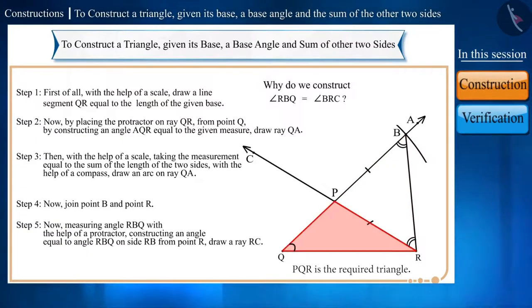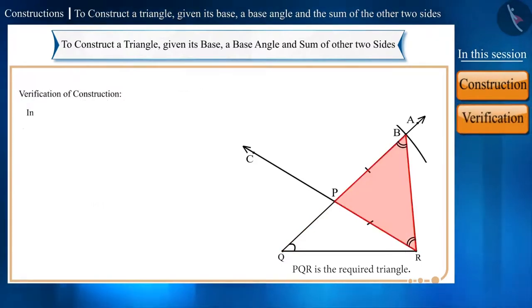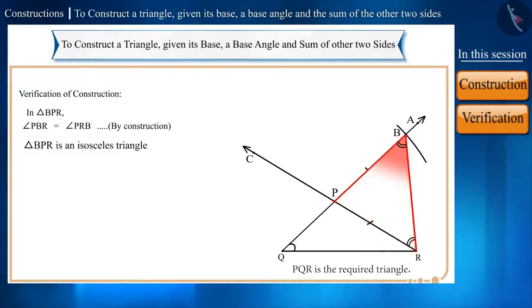Now, we will verify the figure drawn. In triangle BPR, in construction, we made two equal angles, angle PBR and angle PRB. Therefore, angle PBR is equal to angle PRB. Triangle BPR is an isosceles triangle because two of its angles are equal and opposite sides of equal angles in an isosceles triangle are equal in length. So, side PR will be equal to side PB. Let's call it equation 1.